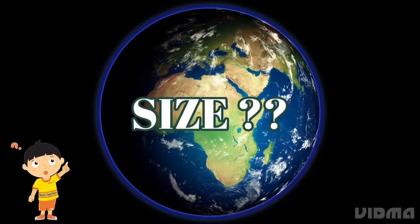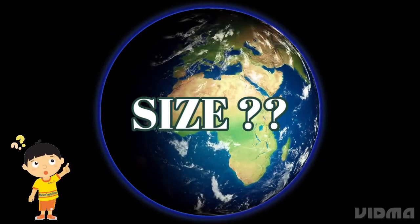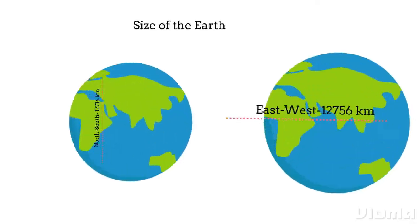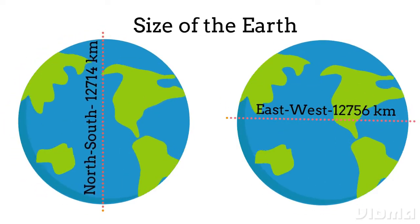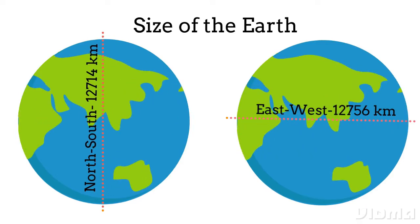Have you all ever wondered what is the size of this Earth? The size of our Earth is measured in two ways, North to South and East to West. From North to South, our Earth measures 12,714 kilometers. And from East to West, it measures 12,756 kilometers.